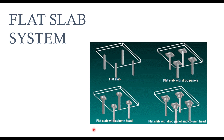Another way of reducing the punching effect on the slab is by introducing column heads or capitals. This is the third type of flat slab connection where you have the flat slab connected with column heads. The column head is a little bit different from the drop panels because the drop panel is attached to the slab, but the column head is attached to the column itself — done in order to reduce the punching effect of the column on the slab. One of the most commonly used connections is the combination of both drop panels and column heads. In this system, you thicken the slab where we have the column and also introduce the column head. This kind of connection is a very effective one for flat slab design.